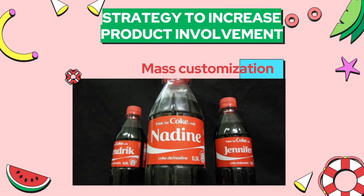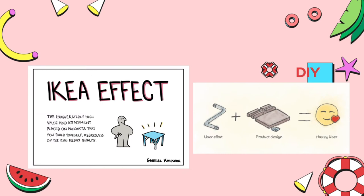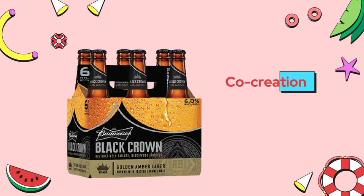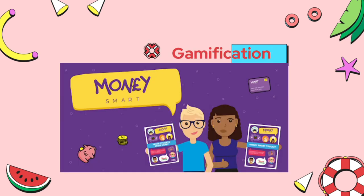Strategies to increase product involvement include: first, mass customization — the personalization of products and services for individual customers at a mass production price. Second, DIY (do it yourself) — because when we build a product ourselves, the item reflects our unique preferences. Third, co-creation — the company works jointly with customers to create value and solve problems. Finally, gamification — the application of gaming principles to non-gaming contexts.